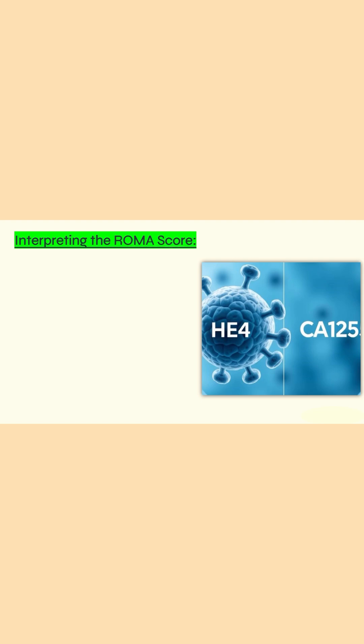Once we have calculated the ROMA score, how do we interpret it? In premenopausal women, if the score is greater than 11.4%, it is considered high risk. If it is less than 11.4%, it is considered low risk for ovarian malignancy.